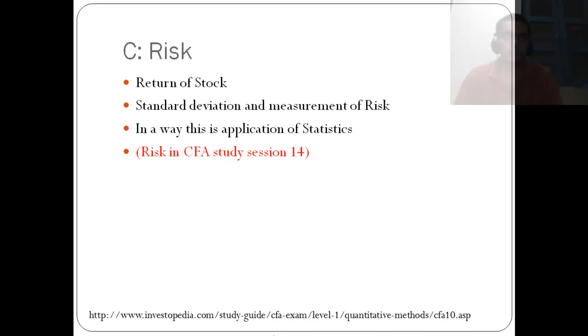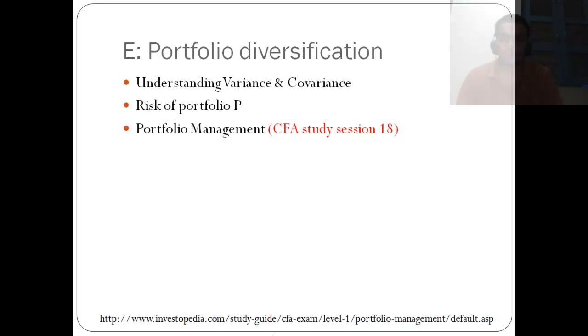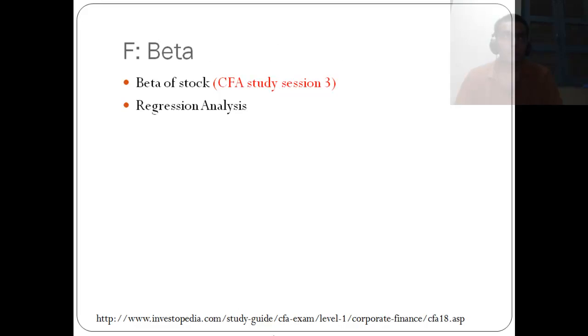The risk is calculated by using the standard deviation which is used to measure the risk and the application of other statistical issues. Then, we have the average growth rate. The portfolio diversification requires understanding of variance and covariance, and the risk of portfolio P is again defined in terms of different things. And then, we have the portfolio management. Beta is the beta of the stock where the rate of stock is fit in the regression model based on the index.